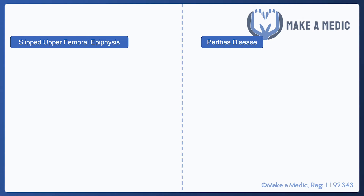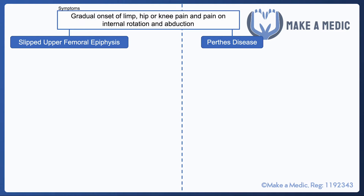Slipped upper femoral epiphysis and Perthes disease are two conditions that affect the hip joint in children. They can be quite confusing to tell apart because they do present relatively similarly, however there are a few nuances that are worth learning about to help you tell these conditions apart when you're answering exam questions.